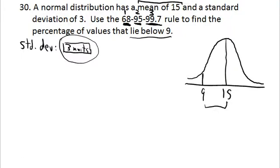How many 3s are there between 9 and 15? If you take 9 and add 3, you're at 12. Add 3 again, you're at 15. So there are two standard deviations between 9 and 15.